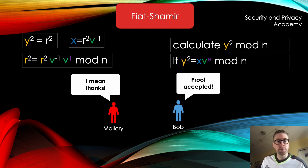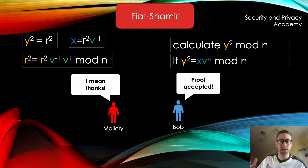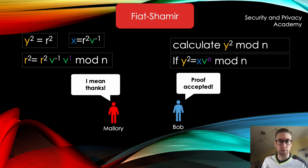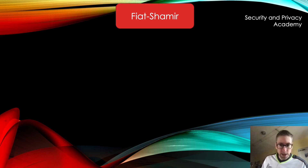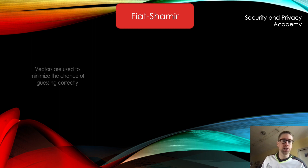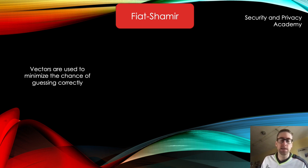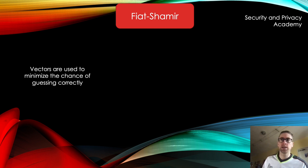Note that if she had guessed e to be 0, it would be even easier to fool the system, because anything to the power of 0 becomes 1 and no shared secret is used anyway. Just as with the secret door, the key to making the Fiat-Shamir heuristic secure is to repeat it as often as necessary. There is always a chance of guessing correctly, but the longer the vector of x's and e's, the smaller the chance of guessing correctly becomes.